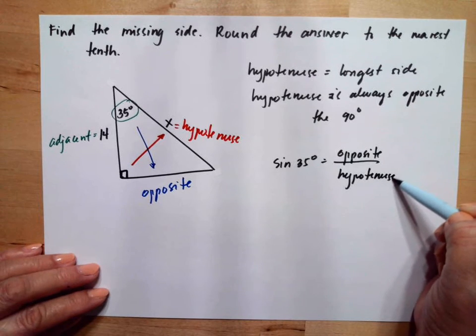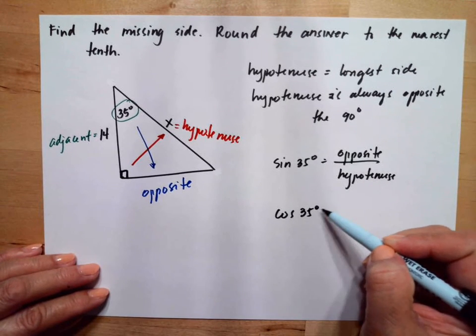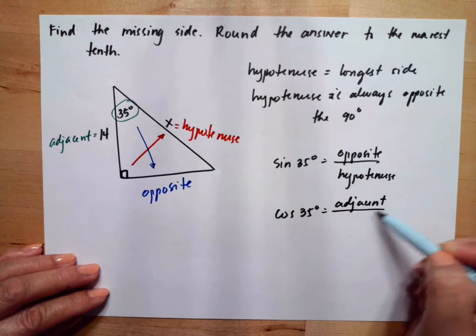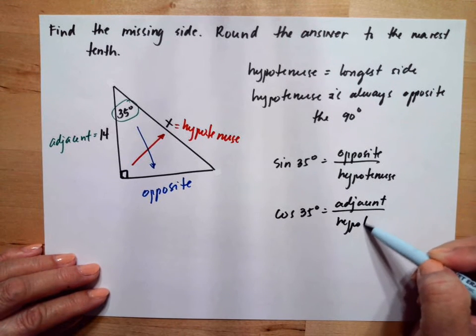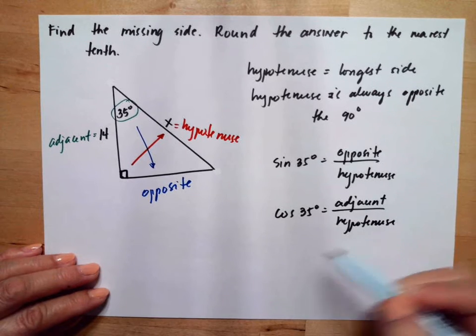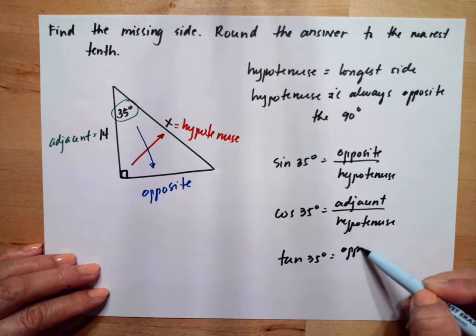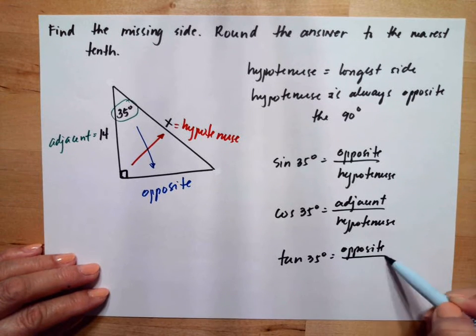Then cosine 35 degrees is adjacent over hypotenuse. And tangent 35 degrees is opposite over adjacent.